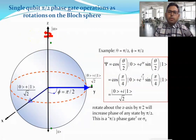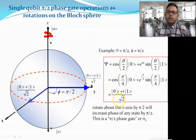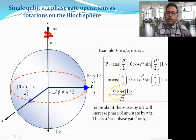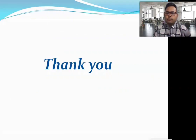The single-qubit π/2 phase gate applies θ = π/2 and φ = π/2, rotating about the z-axis by π/2 and increasing the phase of any state by π/2. After this operation, |ψ⟩ = (|0⟩ + i|1⟩)/√2, giving a phase factor of i. This concludes the overview of the Bloch sphere — please post any questions in the comment section.